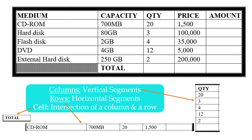Subsequently, rows as horizontal segments: row 1, 2, 3, row 4, row 5, row 6, and row 7. So the structure of this table consists of 7 horizontal segments or 7 rows. Now, the last structure of a table is a cell. A cell is an intersection of a column and a row. There are many small boxes or cells here that have specific data in a particular column.